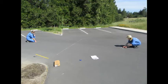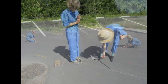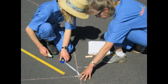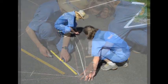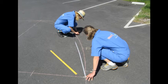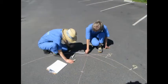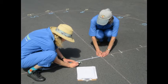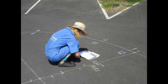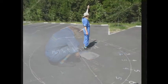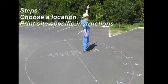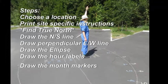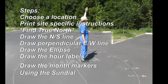To make your own human sundial, you'll need to draw a coordinate system with a north-south line pointing to true north and a perpendicular east-west line. On this coordinate plane, you'll draw an ellipse, and on this ellipse, you'll draw hour labels. On the north-south line, you'll draw month markers. Once the sundial is drawn, standing on the month marker and raising your arms straight to the sky, the shadow cast will indicate the time. It is important that you minimize error so that your sundial is more accurate. We'll walk you through the steps needed to draw your sundial accurately.